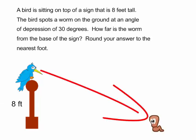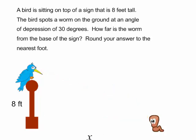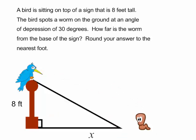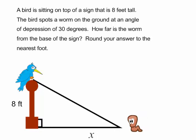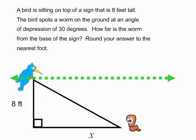And I know that it is at an angle of depression of 30 degrees. What I want to know is how far the worm is from the base of the sign. This can be depicted by a right triangle. Here we have the horizontal. And it said that the bird sees the worm at an angle of depression of 30 degrees. Remember, the angle of depression is the same as the angle of elevation. And I am wanting to know how far the worm is from the base of the sign. So I want to know X.